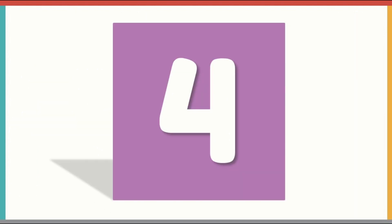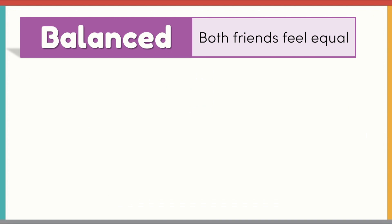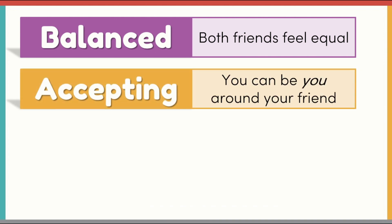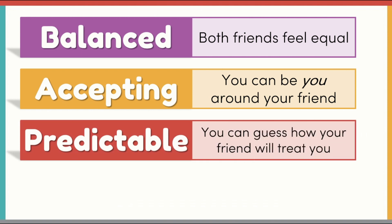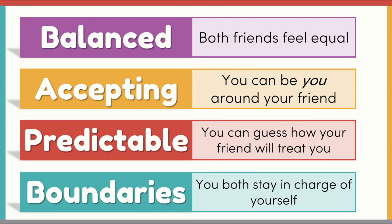Kids will learn four basic traits of a healthy friendship. Healthy friendships are balanced — both friends feel equal. Accepting — you can be you around your friend. Predictable — you can guess how your friend will treat you. And they have boundaries — each person stays in charge of themselves.